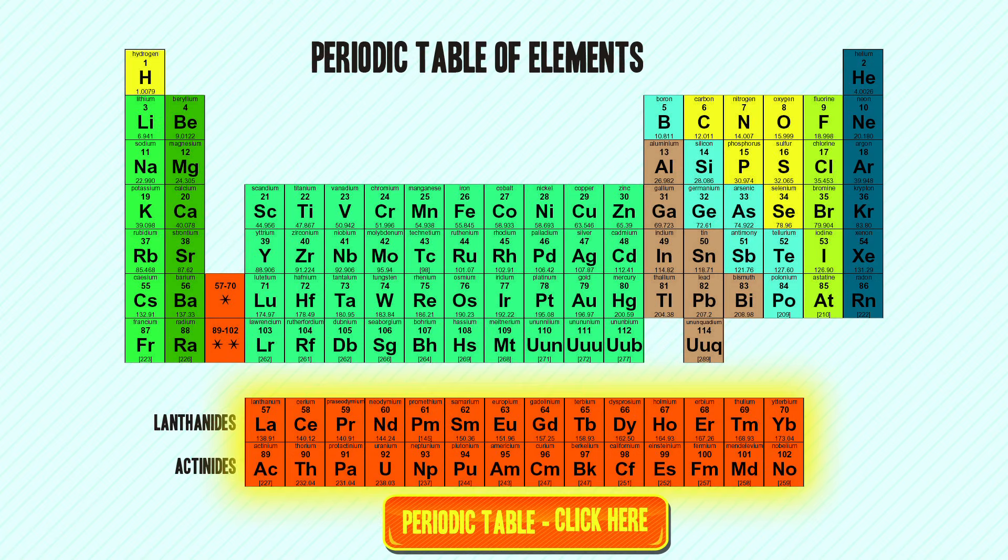Of the ten elements Mendeleev predicted in his first table, seven were eventually discovered. This achievement quickly won Mendeleev some clout, including some clout in his personal life.